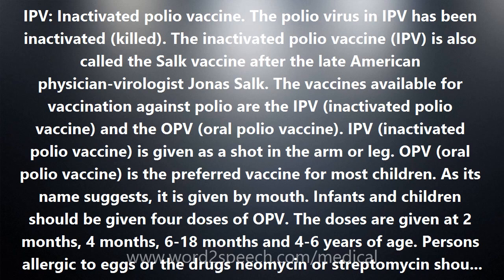OPV, oral polio vaccine, is the preferred vaccine for most children. As its name suggests, it is given by mouth. Infants and children should be given four doses of OPV. The doses are given at 2 months, 4 months, 6–18 months, and 4–6 years of age.